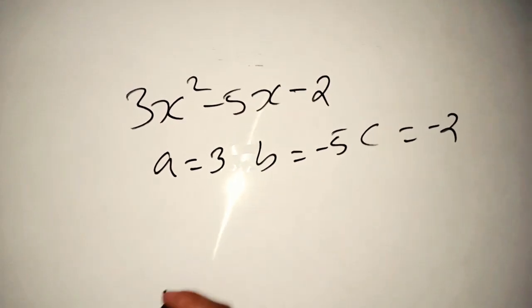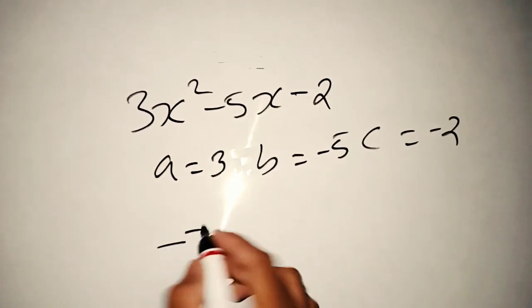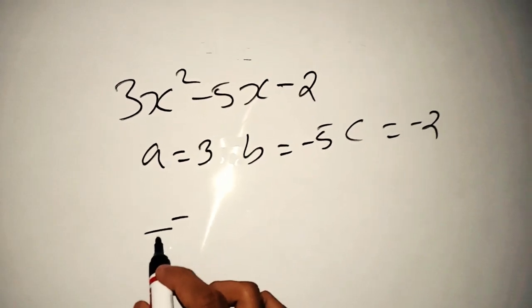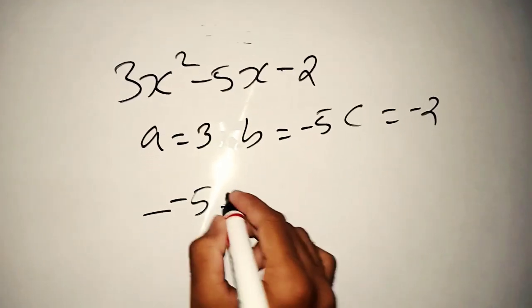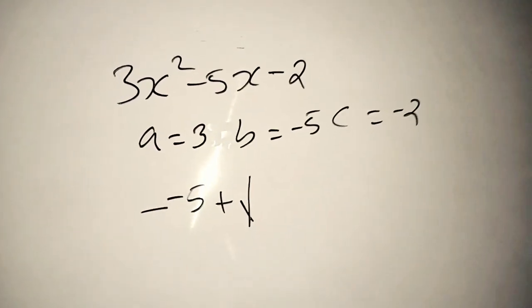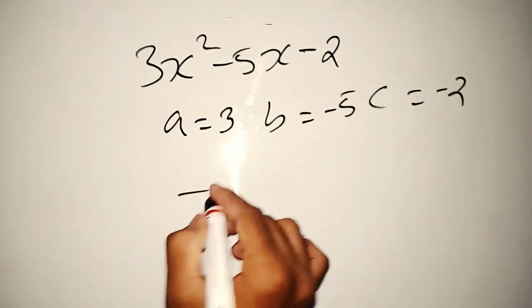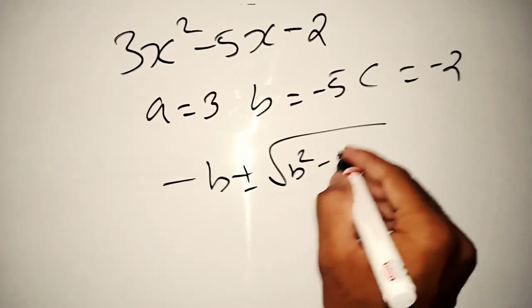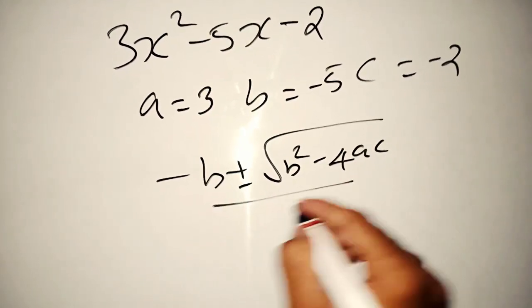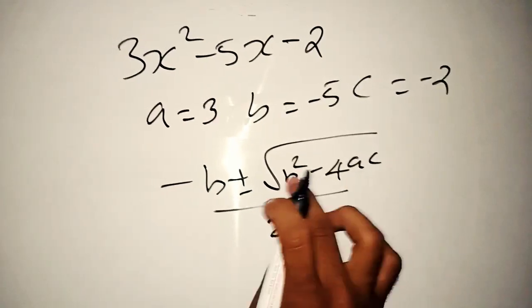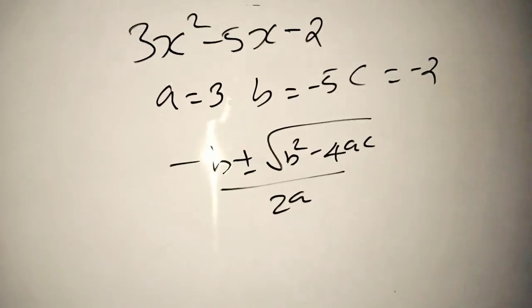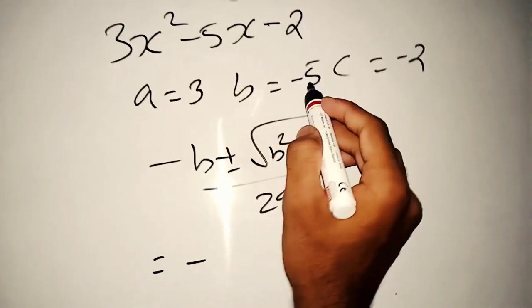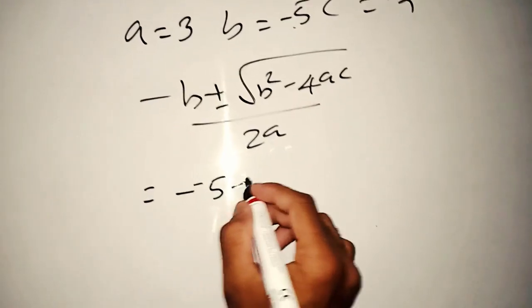Then b is equal to minus 4. Minus of minus. Minus b plus or minus is equal to minus. Equation is equal to minus. 5 plus or minus root. You can factor in both multiplicity, so you should factor in both plus and minus.